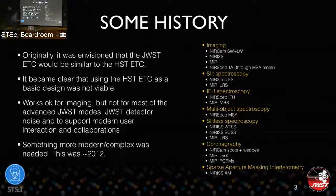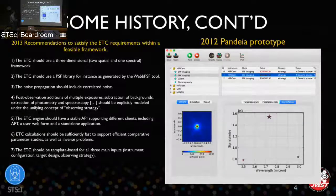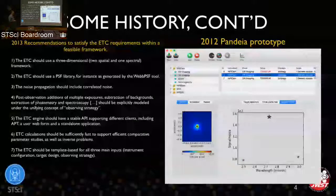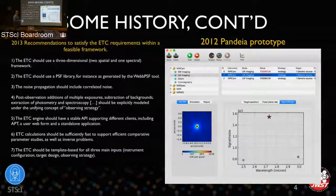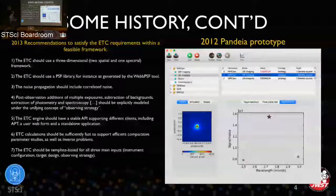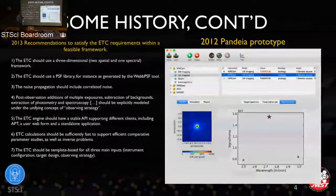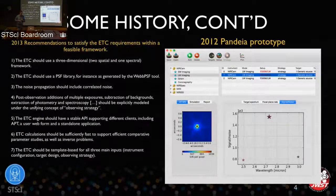It became clear around 2012 that we needed something more modern and complex. A number of recommendations were made for the JWST exposure time calculator. The first was that the ETC should use a three-dimensional framework — two spatial and one spectral dimension. In the past, ETCs typically collapsed spatial dimensions down into one-dimensional formulas, but that becomes difficult when modeling extended sources like IFUs. To help with that, the ETC should use a PSF library generated by the WebbPSF tool.